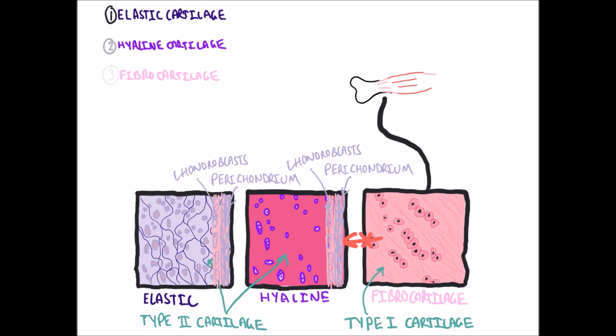This high-stress environment is found in tendons of muscles, which attach to bone. Instead of perichondrium surrounding muscle, there is a fibrous sheath called the epimysium, and that surrounds the fibrocartilage, not a perichondrium.